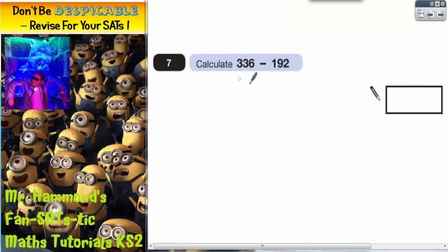Question number seven. Calculate 336 subtract 192.